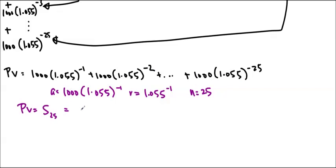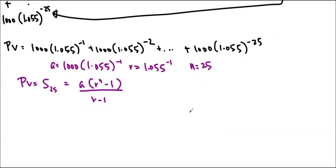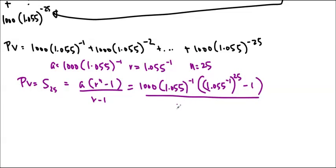And we're going to use that formula. So Ar to the n minus 1 over r minus 1. That's the geometric series formula that we learned in the last unit. So we're going to just put this number in. So this is $1,000 times 1.055 to the negative 1. That's A times 1.055 to the negative 1 to the 25 minus 1 over 1.055 to the negative 1 minus 1.